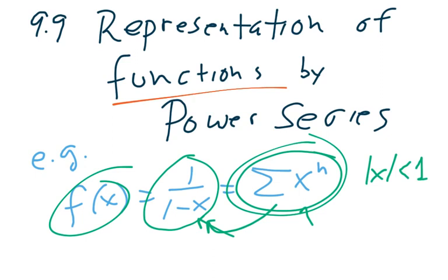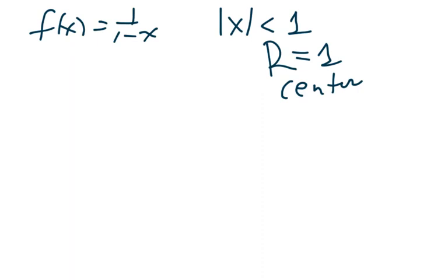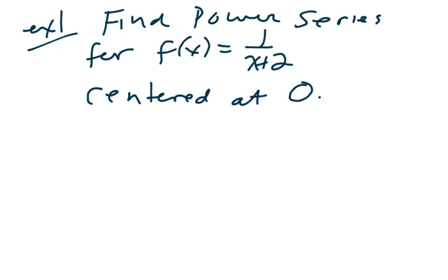So in this sense, we did represent a function by a power series. But let's recall the restrictions on that. This f of x is 1 over 1 minus x, that works on this condition, which means our radius of convergence, r, is 1, and this is also centered at 0. So if we wanted to change the center or change the radius of convergence, we would have to come up with a different function.